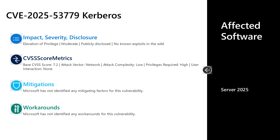The third vulnerability I will talk to this month is CVE-2025-53779. This is a moderate severity elevation of privilege vulnerability in Kerberos. This one was publicly disclosed with no known exploits out in the wild. It has a base CVSS score of 7.2. The attack vector is over the network, the attack complexity is low, privileges required is high, but no user interaction is required to leverage this vulnerability. An attacker who successfully exploits this could gain domain administrator privileges. The affected software is Server 2025.